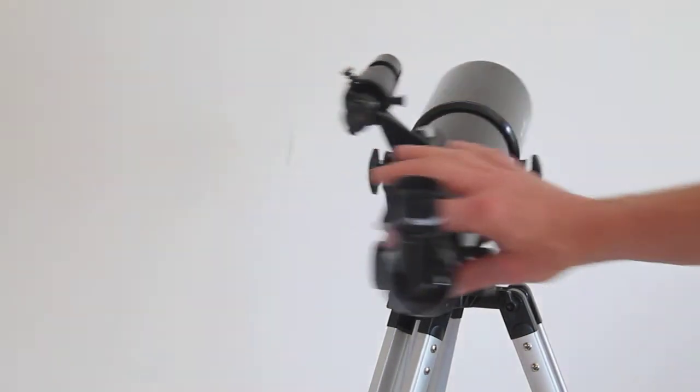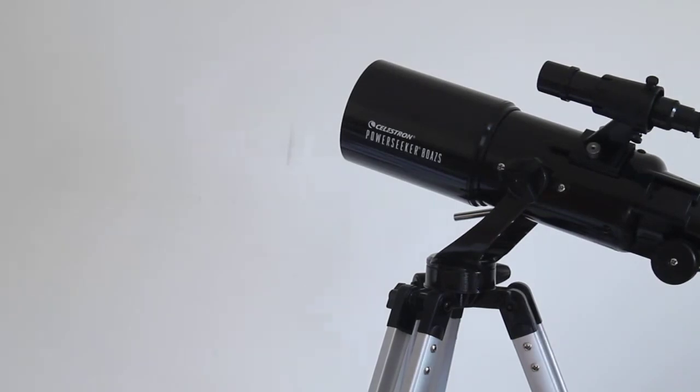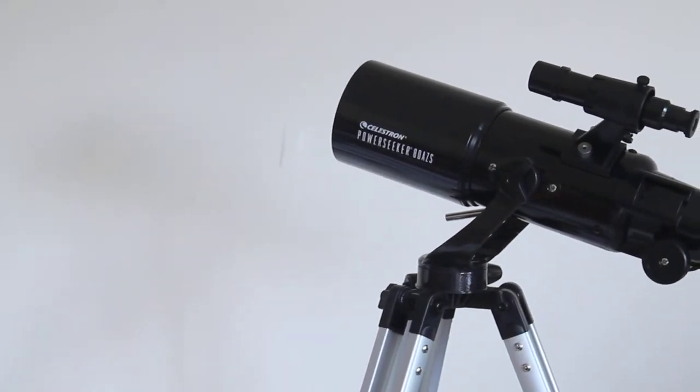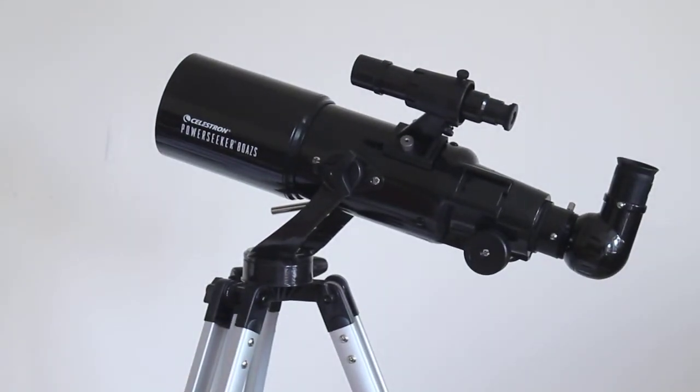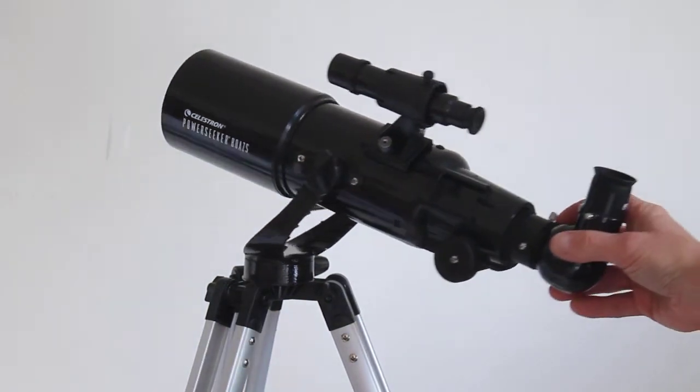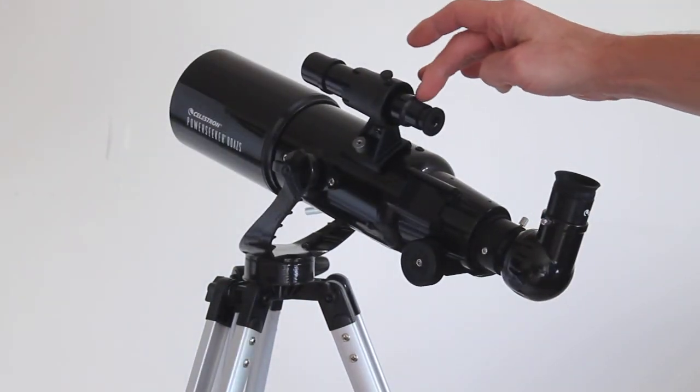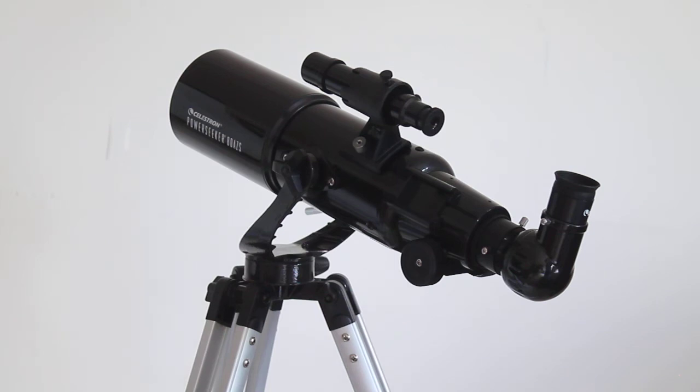Excuse me while I turn the telescope around and reposition the camera. Now we have a look at the other side. As standard, you get a 5x24 basic visual finder scope there, but it does have the connection so you can fit a red dot finder on if you prefer.